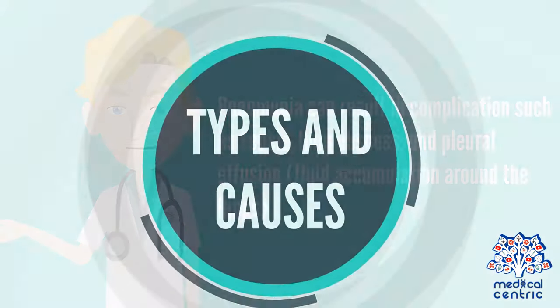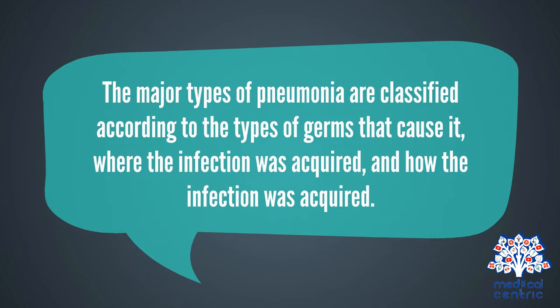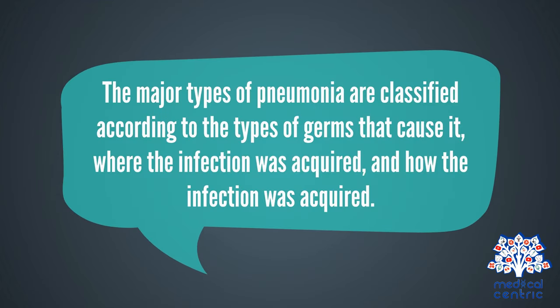Types and Causes. The major types of pneumonia are classified according to the types of germs that cause it, where the infection was acquired, and how the infection was acquired.